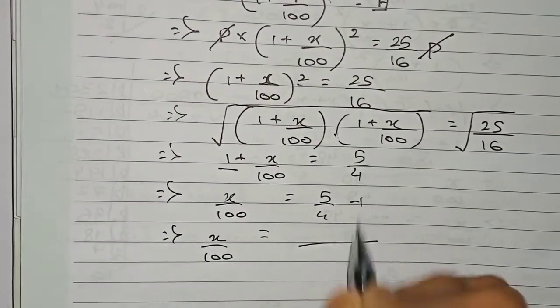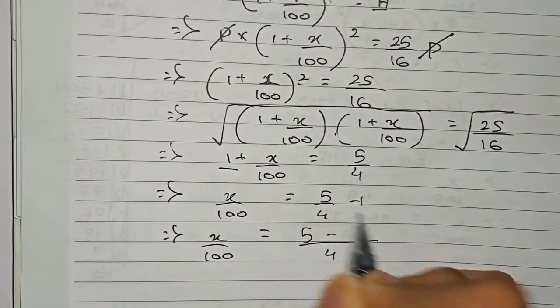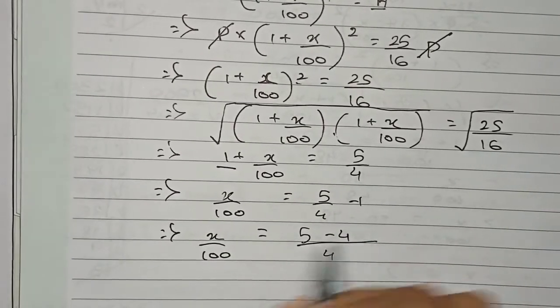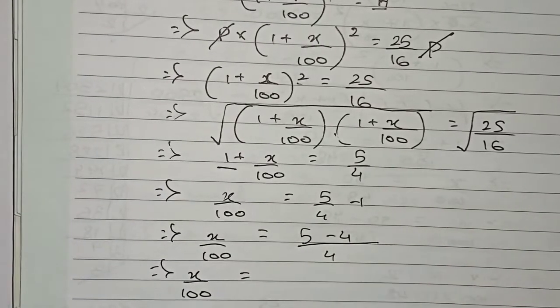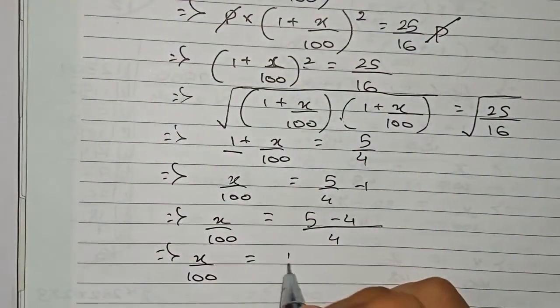x by 100 will be equal to, so we take 4 as the common denominator: 5 minus 4 into 1, that is minus 4. So x by 100 equals 5 minus 4, which equals 1 by 4.